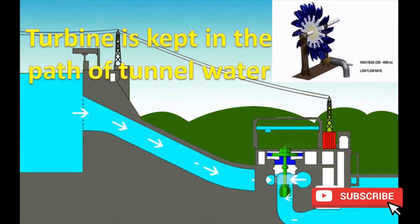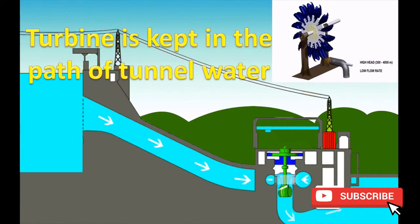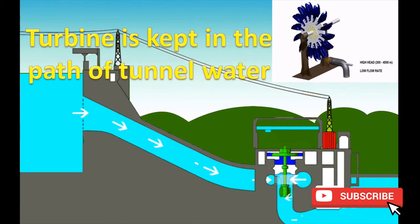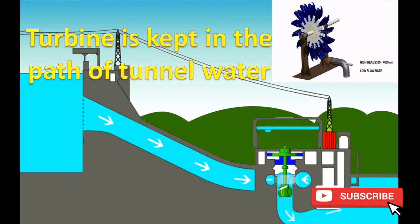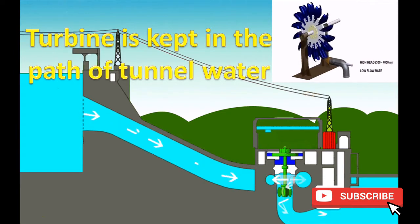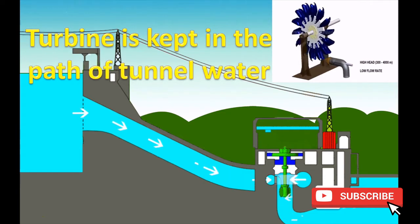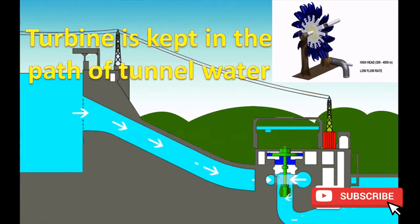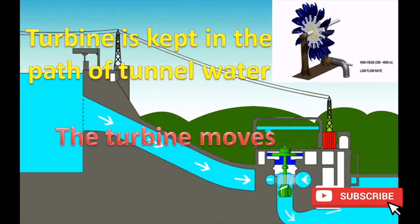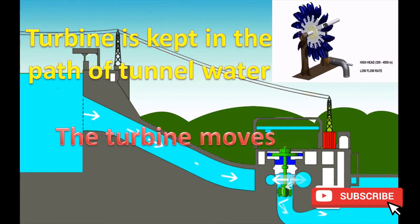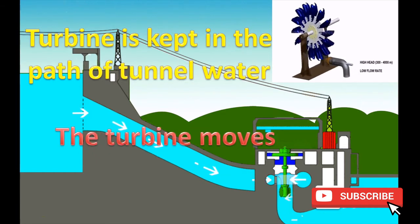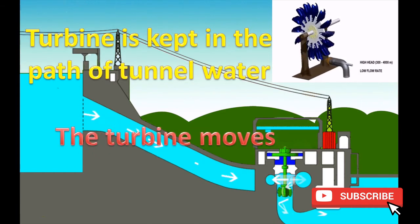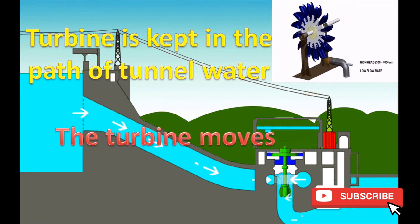A turbine is kept in the path of the tunnel or slope tunnel. The tunnel water rotates the turbine. The turbine moves due to the kinetic energy of the flowing water.